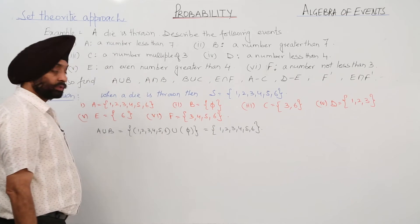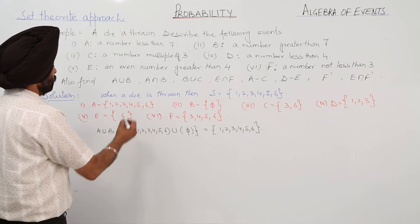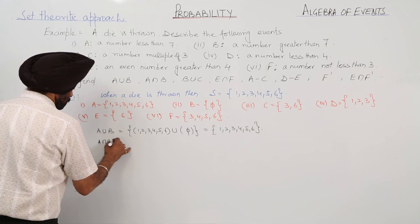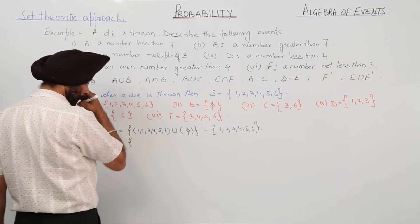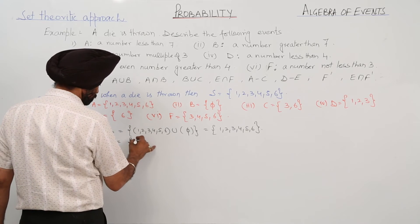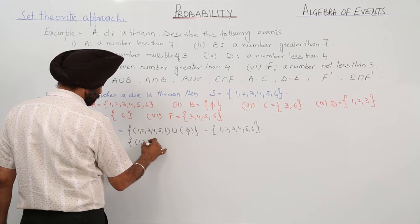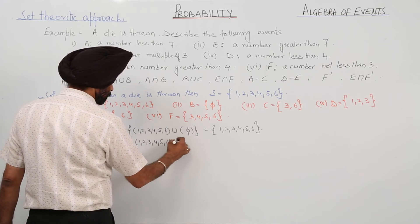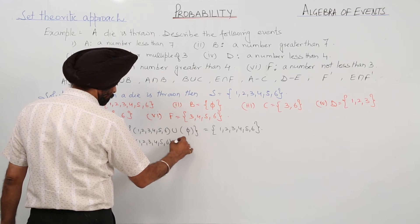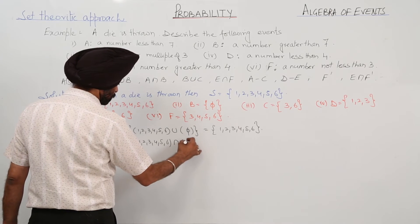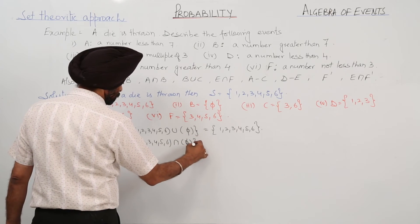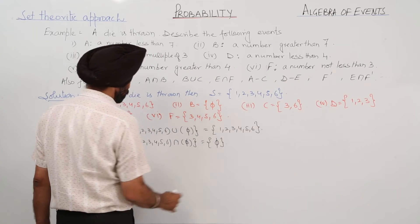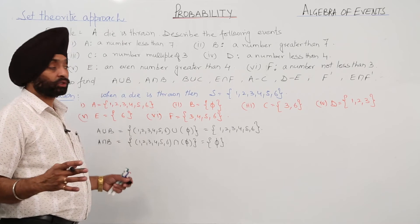Then A intersection B. A intersection B: {1, 2, 3, 4, 5, 6} intersection with empty set — that is empty (∅), because nothing is common in the two events.